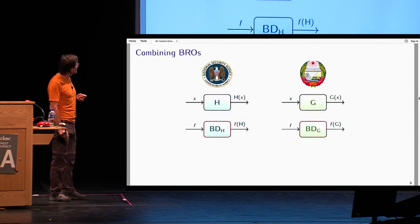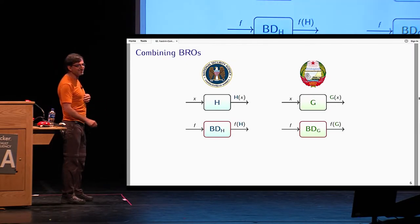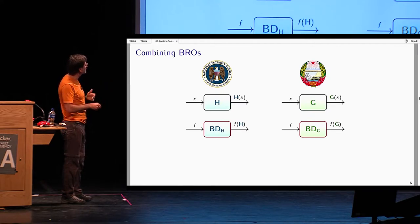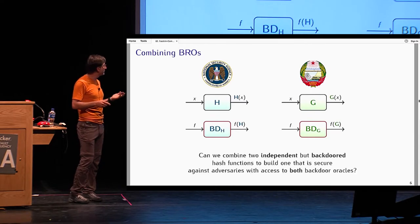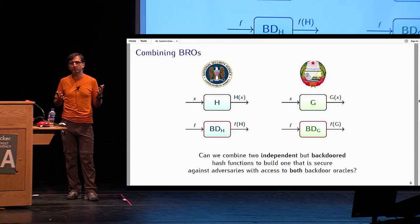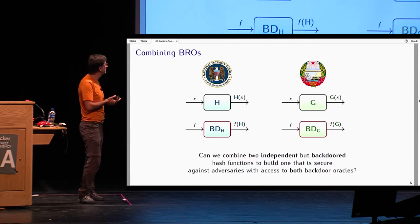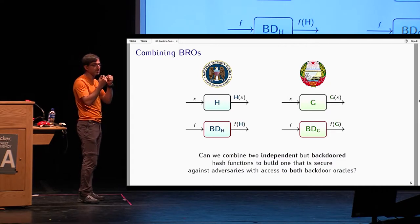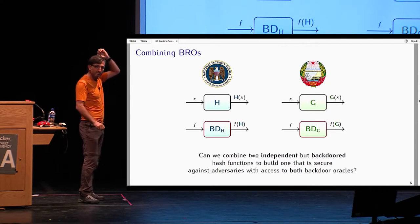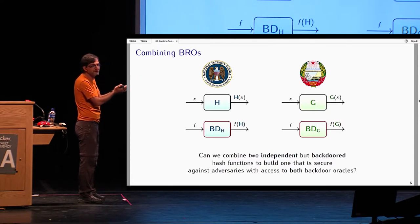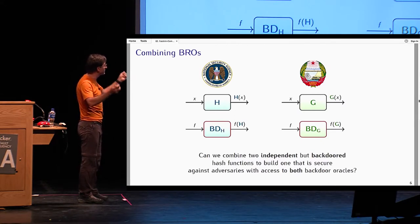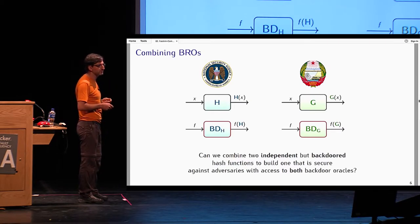However, suppose that I have two big brothers who have designed two independent hash functions, h and g, which behave independently, but they also have access to their respective backdoor oracles. The question is then whether we can combine these two hash functions in a way so that we can bootstrap some sort of cryptographic hardness while the adversary gets access to both of these backdoor oracles. These backdoor oracles model the fact that there could be a trapdoor in the hash function. The adversary can talk to these oracles and is trying to break the combined hash function.